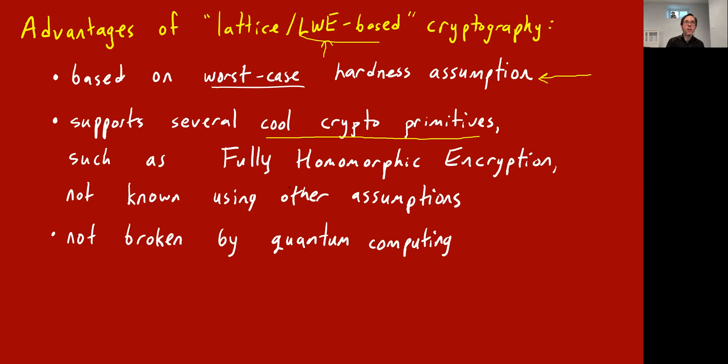A famous example that came out around 10 years ago is fully homomorphic encryption — a cool cryptographic primitive that generated a lot of excitement. People know how to construct it assuming the LWE assumption, but they don't know how to construct it just assuming factoring random integers is hard.